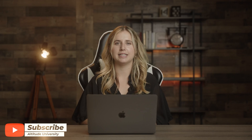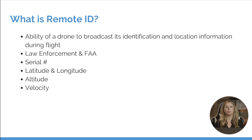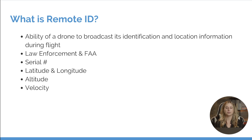So to start off, what is remote ID? Remote ID is the ability of a drone to broadcast its identification and location information during flight. Primarily this is so that law enforcement and the FAA have the ability to view this information. The information being broadcast includes the serial number, latitude and longitude of the drone, and the altitude as well as the velocity.